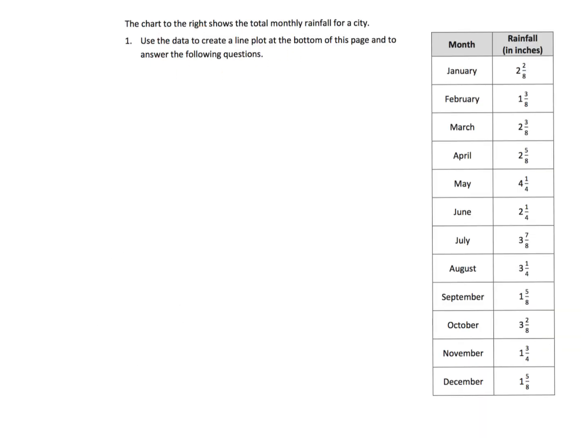So the first thing is we're asked to create a line plot. And so the idea is when you're making a line plot, you need to look at your data over here and you need to figure out what's your least, your smallest number. In this case, it looks like our smallest number is one and three-eighths. And if I'm not mistaken, that's the smallest, and it looks like our greatest number is four and one-fourth. So when you're making a line plot, you need your line plot to go from something a little less than your lowest to something a little higher than your highest. So we're going to make our line plot go from one to five.